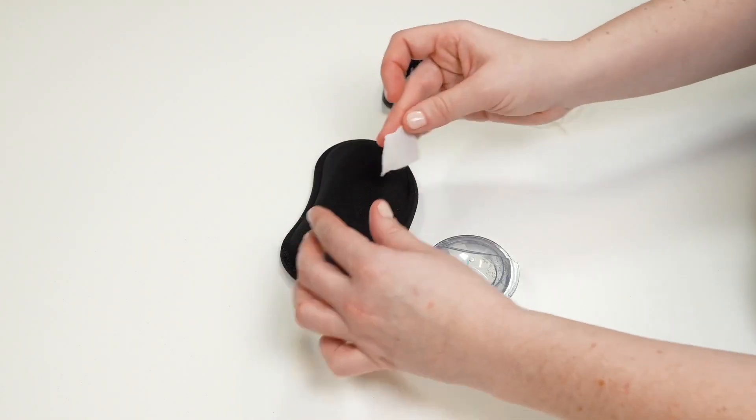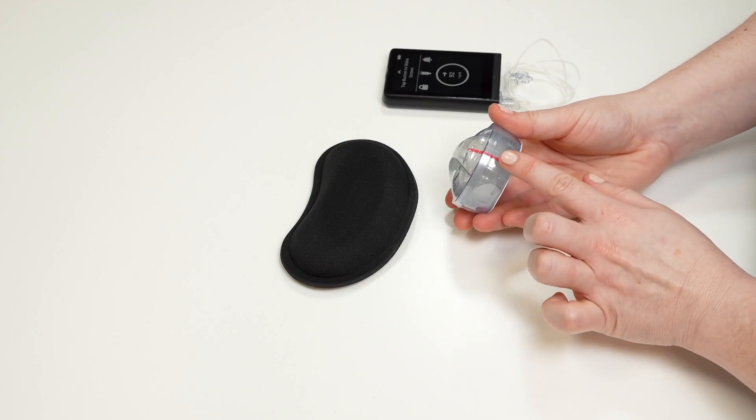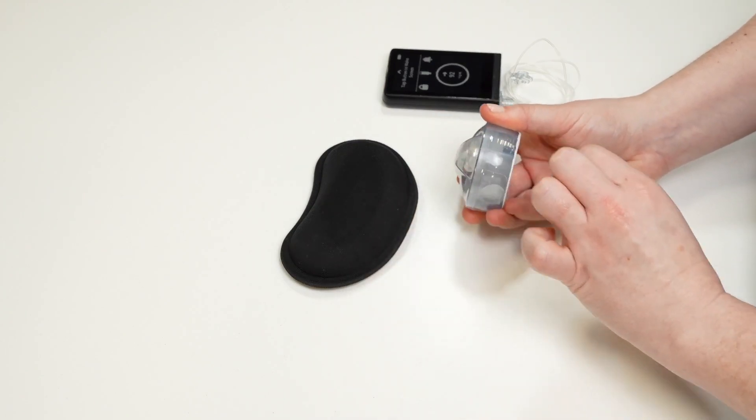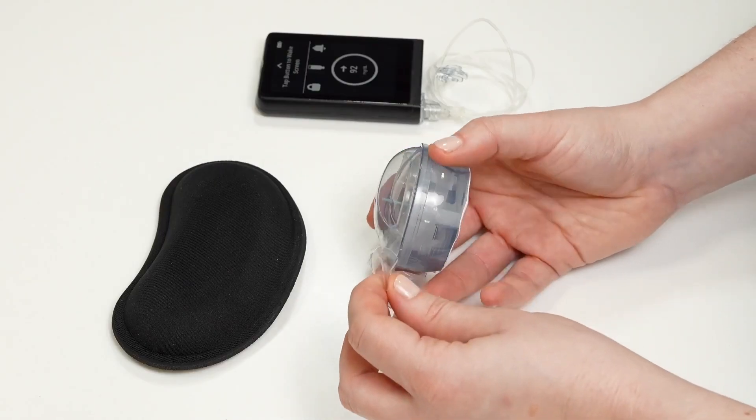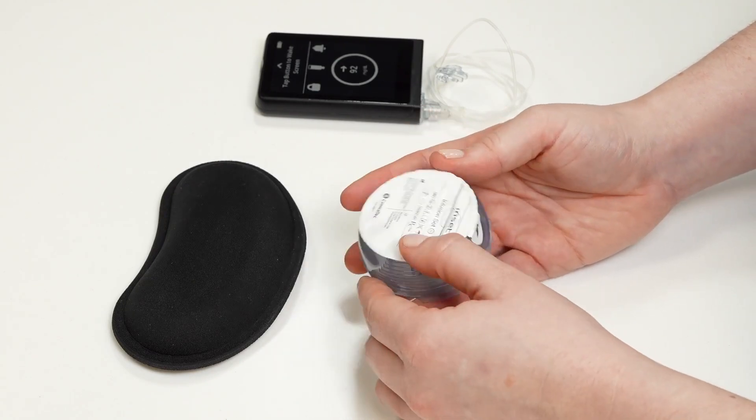Open your inset infusion set by pulling on the red tab and removing the plastic wrapping. Next, use this pull tab to remove the white paper from the bottom.